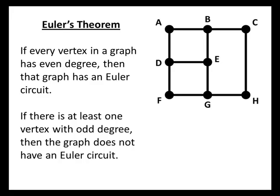So how do we figure out whether or not the graph has an Euler circuit? We use Euler's theorem. Euler's theorem says two things. First, if every vertex in a graph has even degree, then that graph has an Euler circuit. But if there's at least one vertex with odd degree, then the graph does not have an Euler circuit.